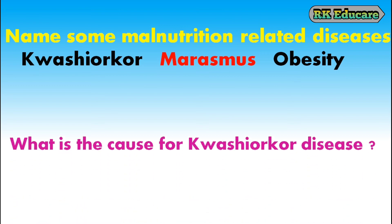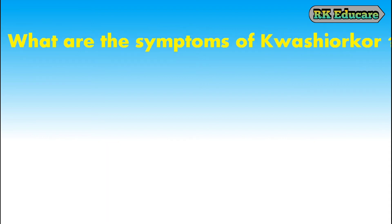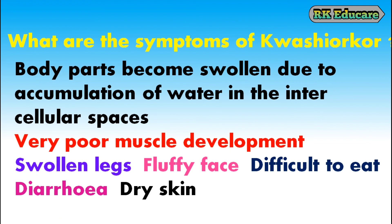What is the cause of Kwashiorkor disease? Kwashiorkor disease is due to protein deficiency in the diet. What are the symptoms of Kwashiorkor? Body parts become swollen due to accumulation of water in the intercellular spaces, very poor muscle development, swollen legs, puffy face, difficulty in eating, diarrhea and dry skin — these are all symptoms of Kwashiorkor.